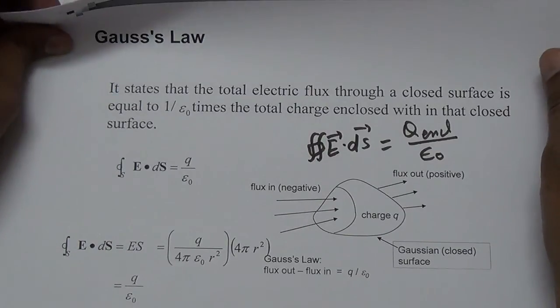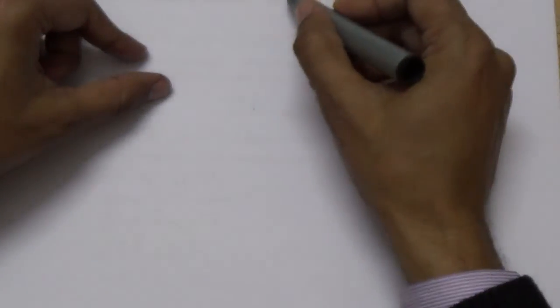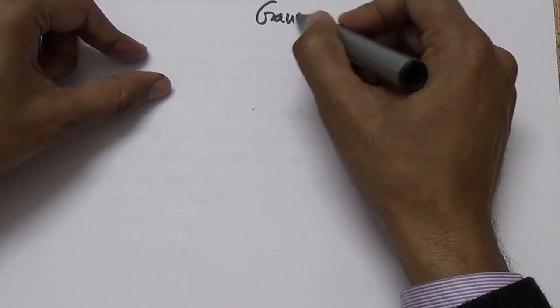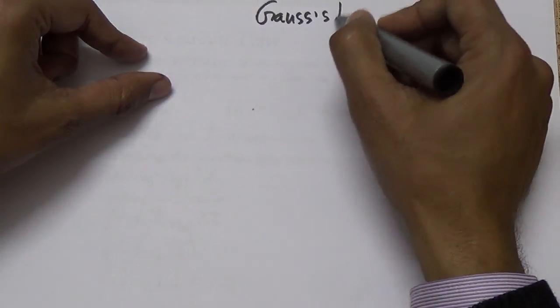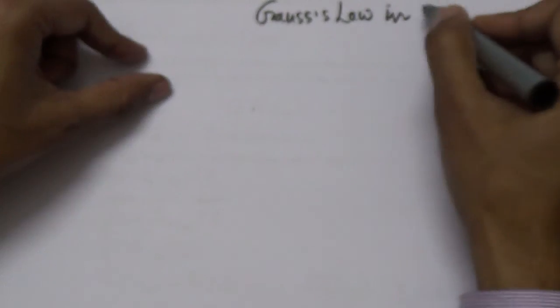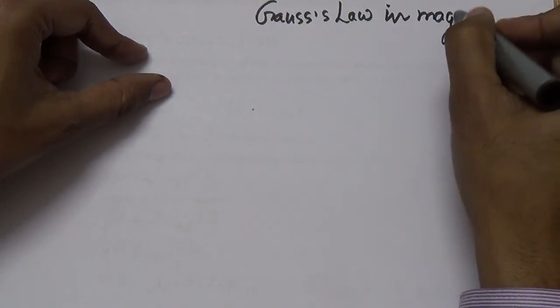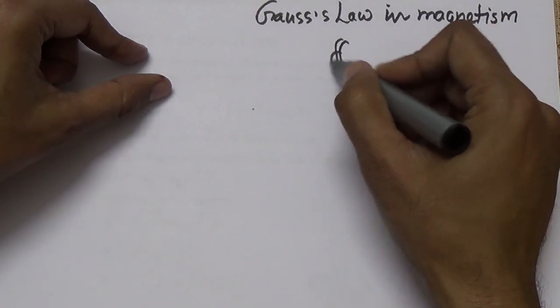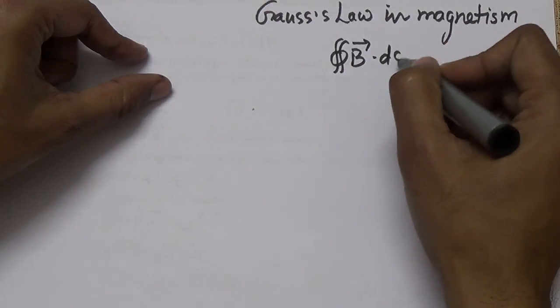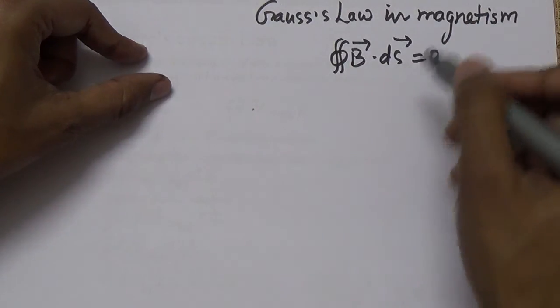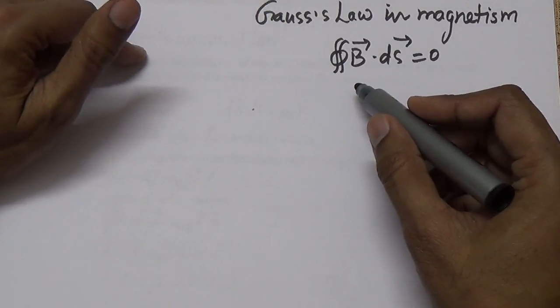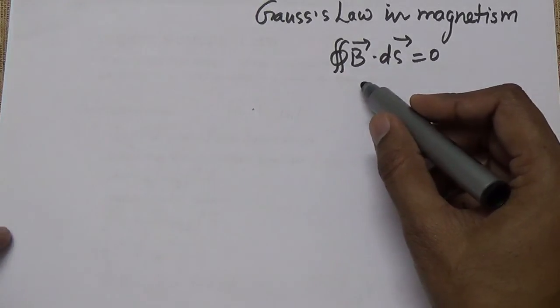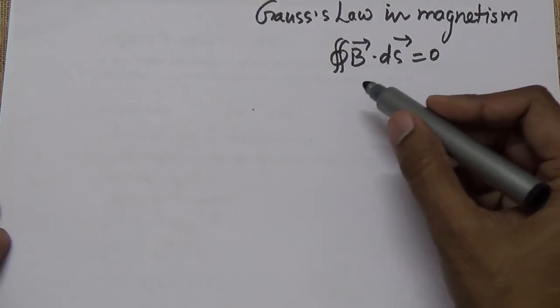Now the second law is Gauss law in magnetism. In the same way we can write that Gauss law in magnetism states that the closed surface integral B·dS equals zero. Again we can apply the Gauss Divergence Theorem.